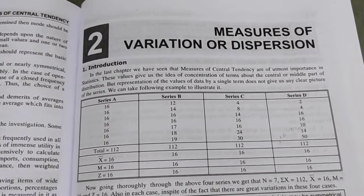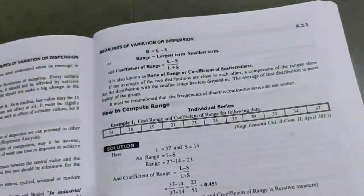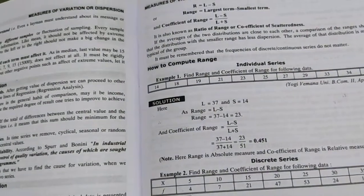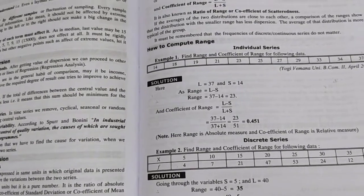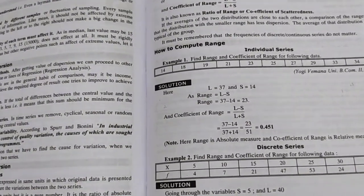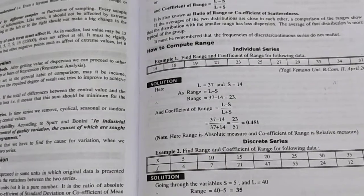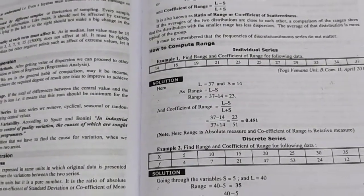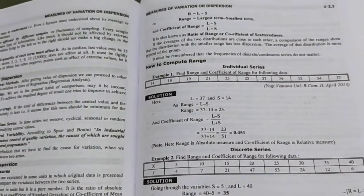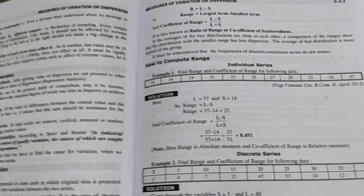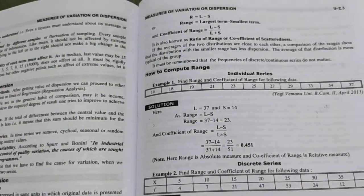Next we are going to discuss measures of dispersion. Under measures of dispersion, we have five topics: range, quartile deviation, mean deviation, standard deviation, and coefficient of variation. Today I am going to discuss range, covering individual series, discrete series, and continuous series.